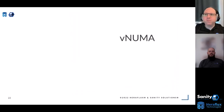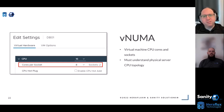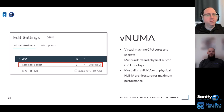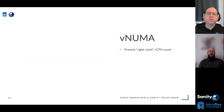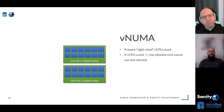We have to match the VM to the physical topology to maintain performance. First, understand the right-sized amount of CPUs your workload actually needs. If the workload core count and memory count fit inside one physical socket NUMA node, build the VM as such. For example, a 10-core SQL Server VM with 64 GB of RAM: 10 fits inside a 12-core socket comfortably, and 64 GB fits inside 256 GB on that socket — build it as one socket by 10 cores. Simple.